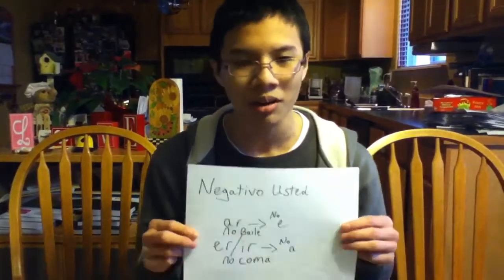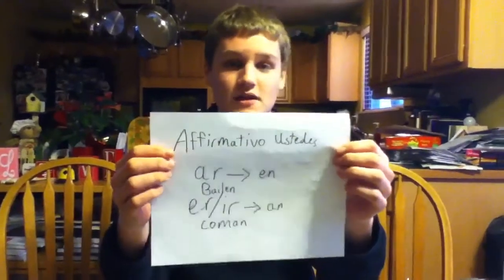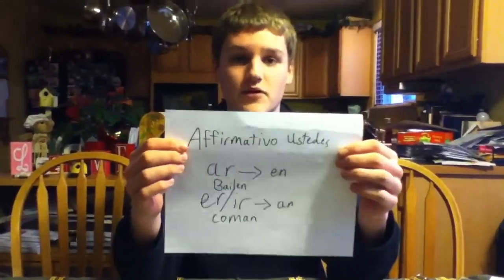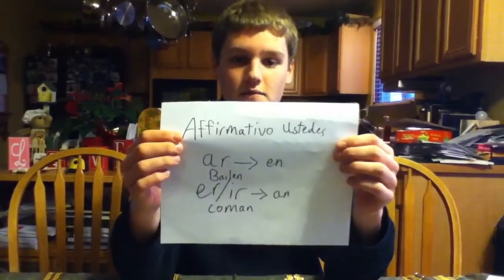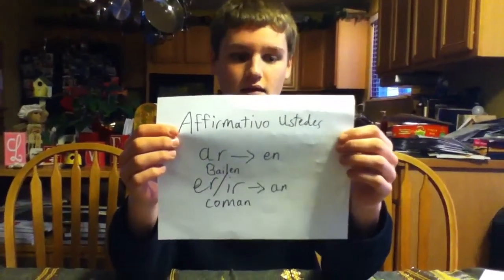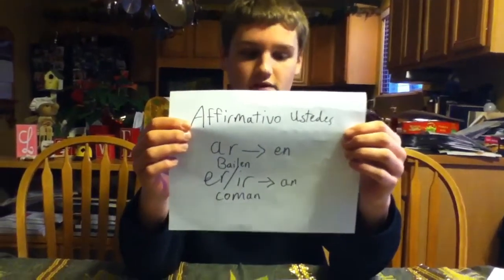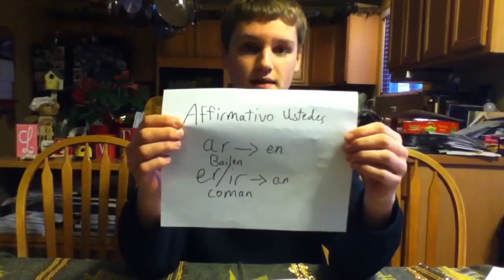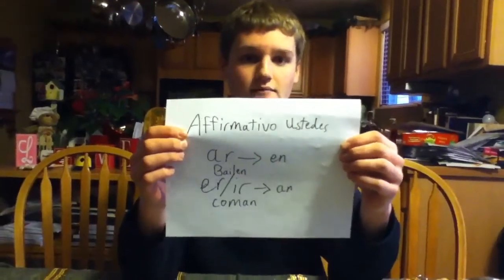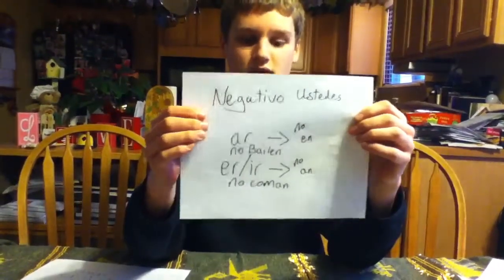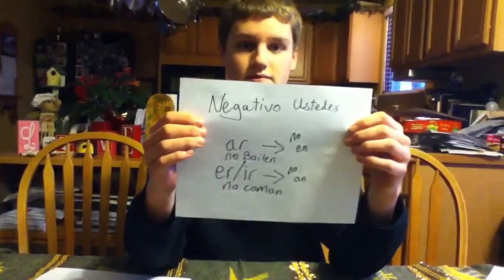For example, no baila or no coma. For the ustedes affirmative mandato, conjugate the verb in the yo form, drop the O, and add the appropriate ending. For an AR verb add EN, and for an ER or IR verb add AN. For example, bailar becomes bailen and comer becomes coman. For the ustedes negativo, just add no to the beginning.